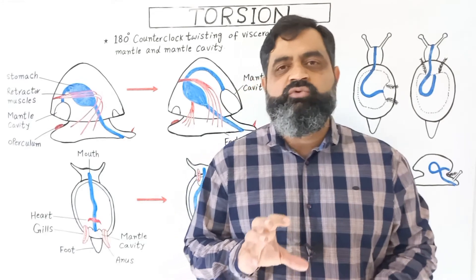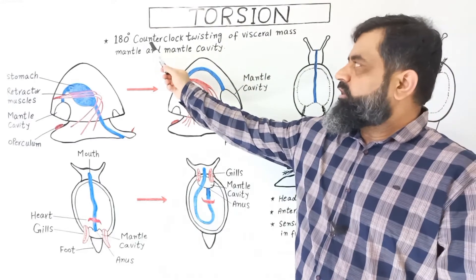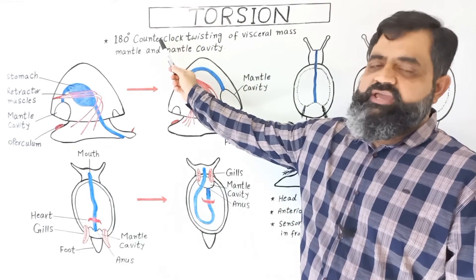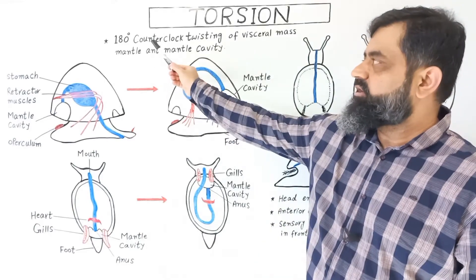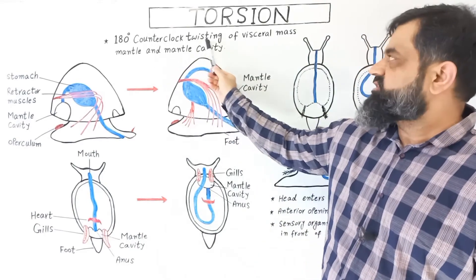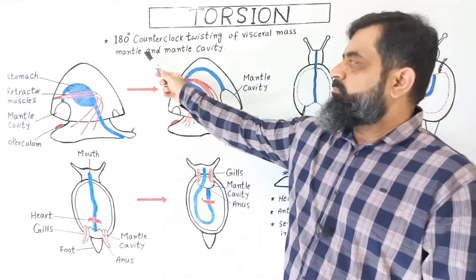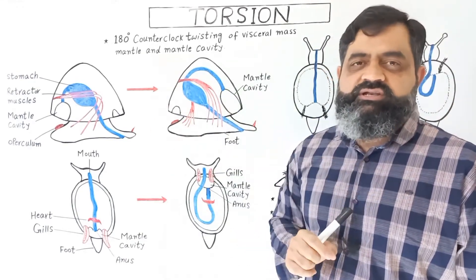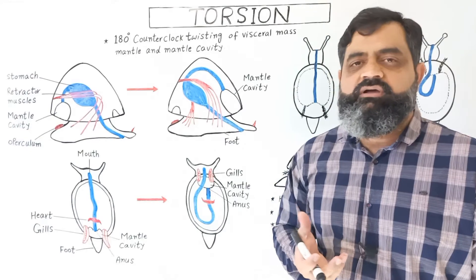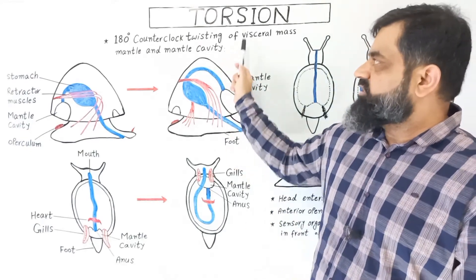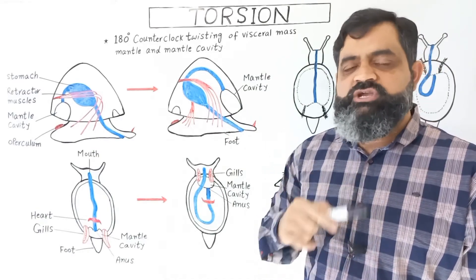What is torsion? First of all we have to look at the definition. Torsion is the movement or twisting of visceral organs at 180 degrees, a movement of the body organs at 180 degrees counterclockwise. This involves twisting of the visceral mass — the internal mass including the heart, digestive system, and other body organs — as well as the mantle, which is the epithelial surface inside the mantle cavity that produces shells, and the mantle cavity itself, which is sensory in function and also helps in respiration. All of these organs rotate and twist at 180 degrees, forming a U-shaped digestive system.